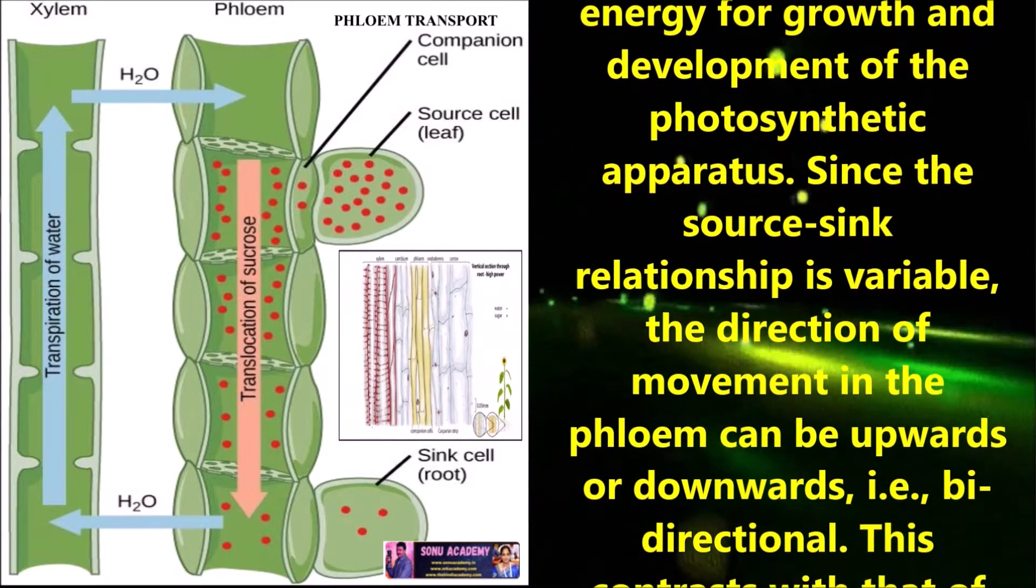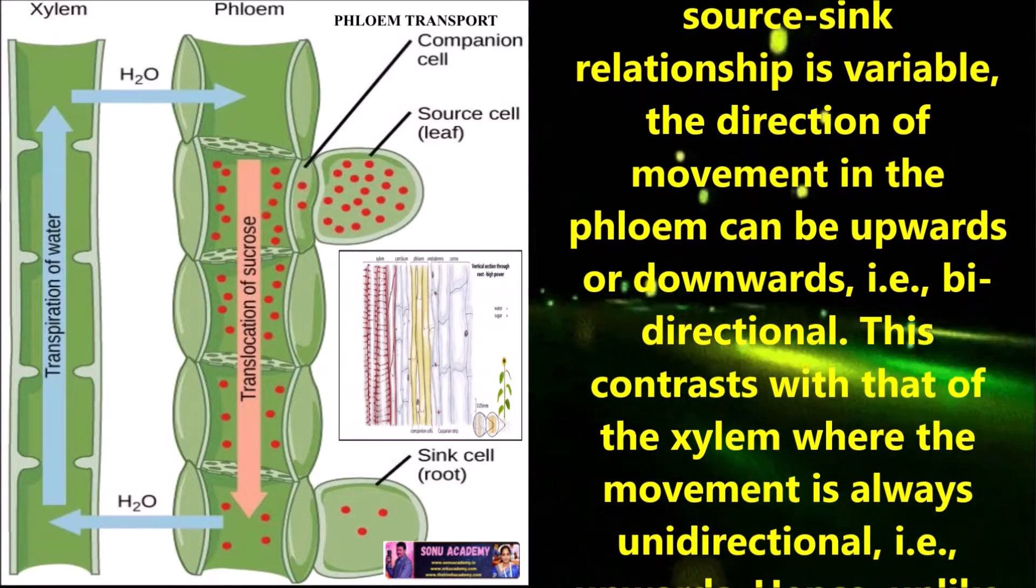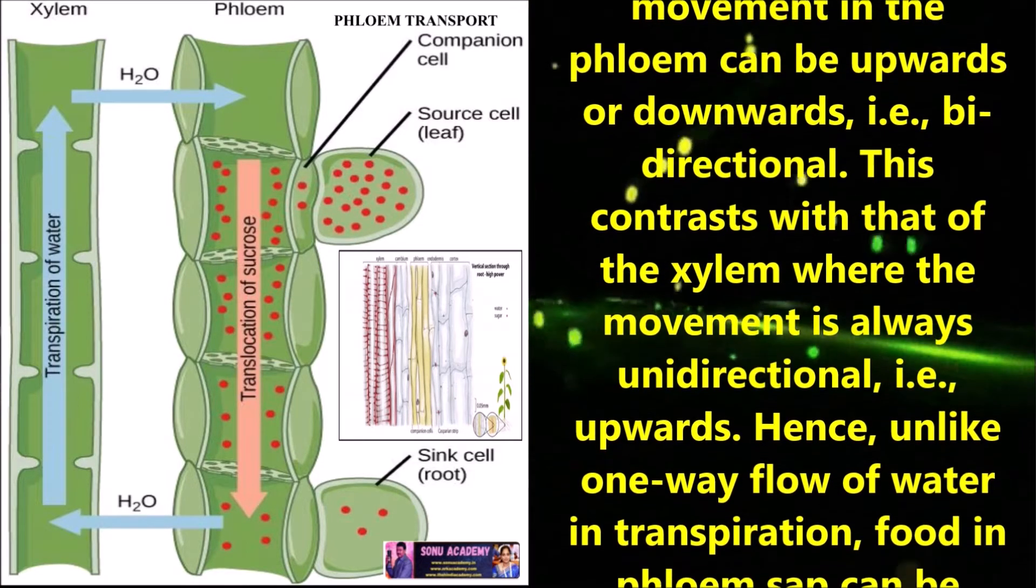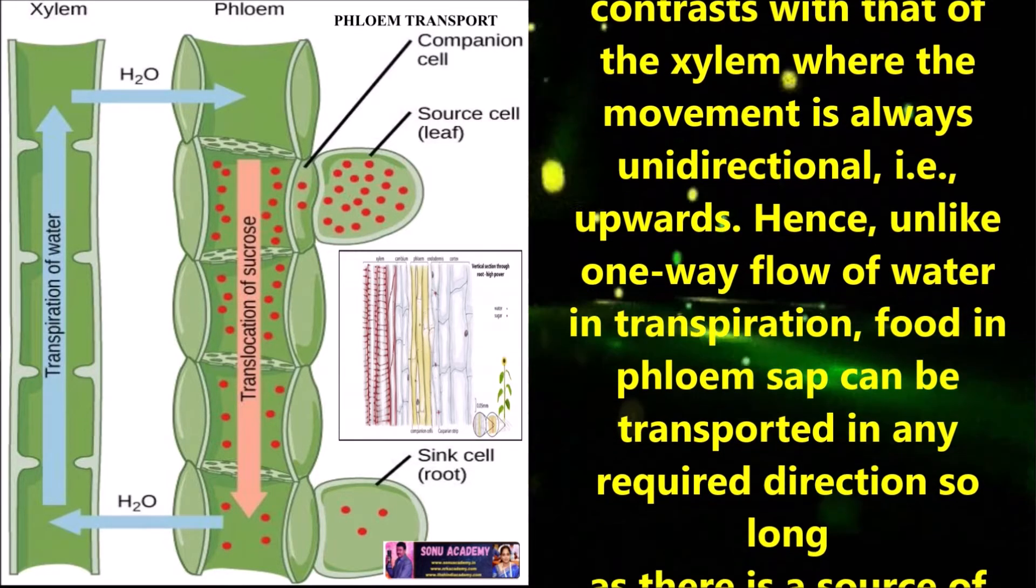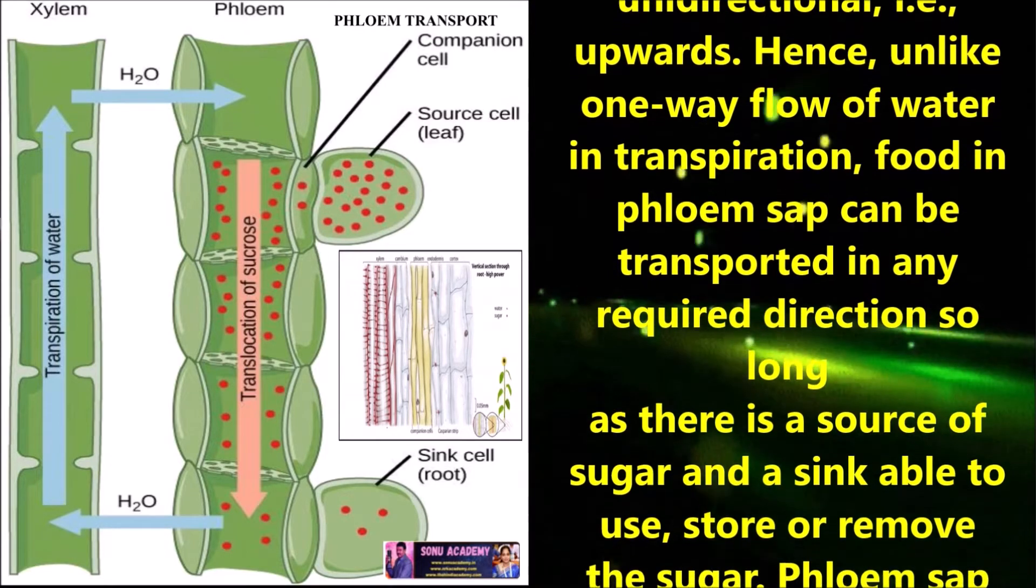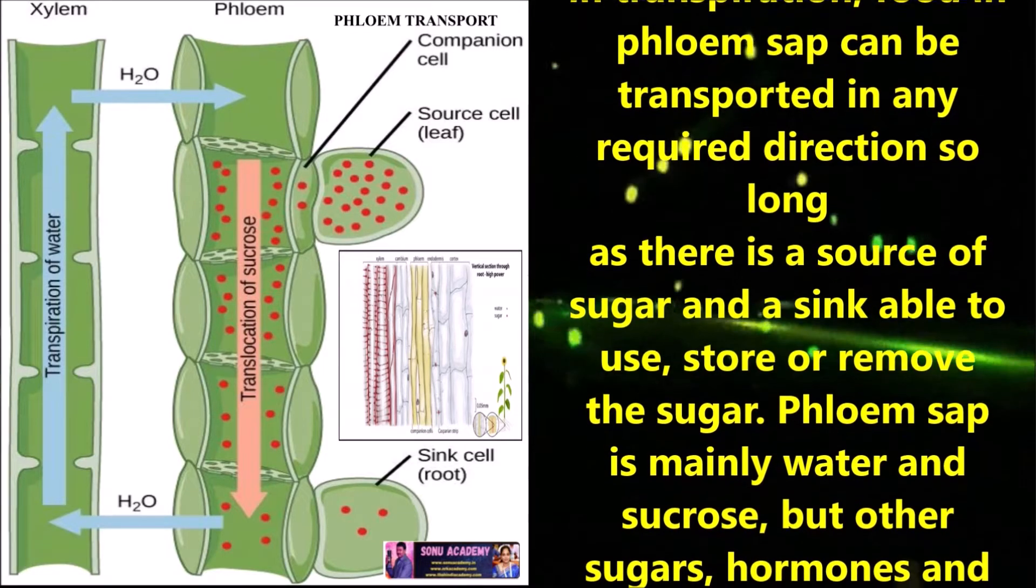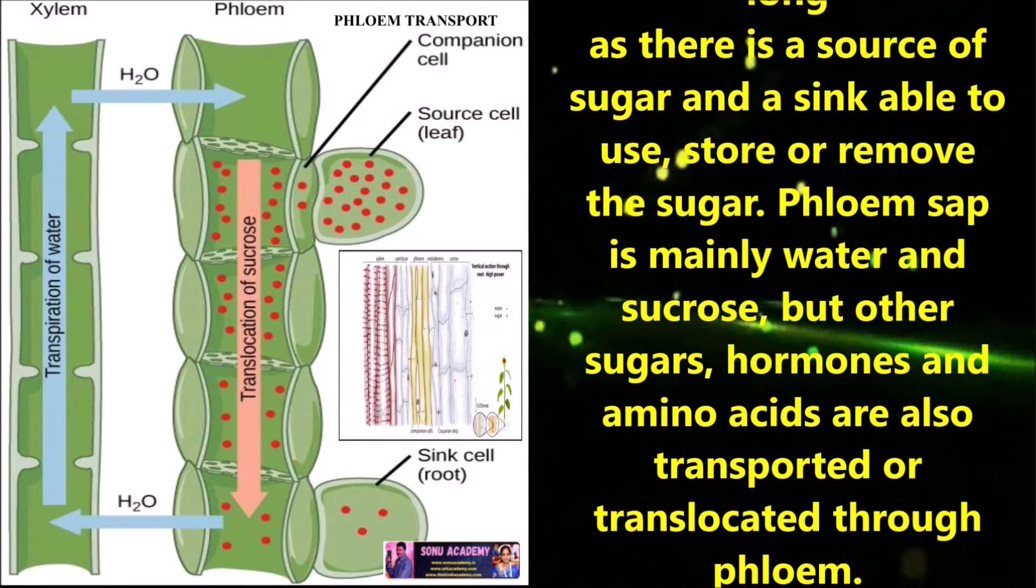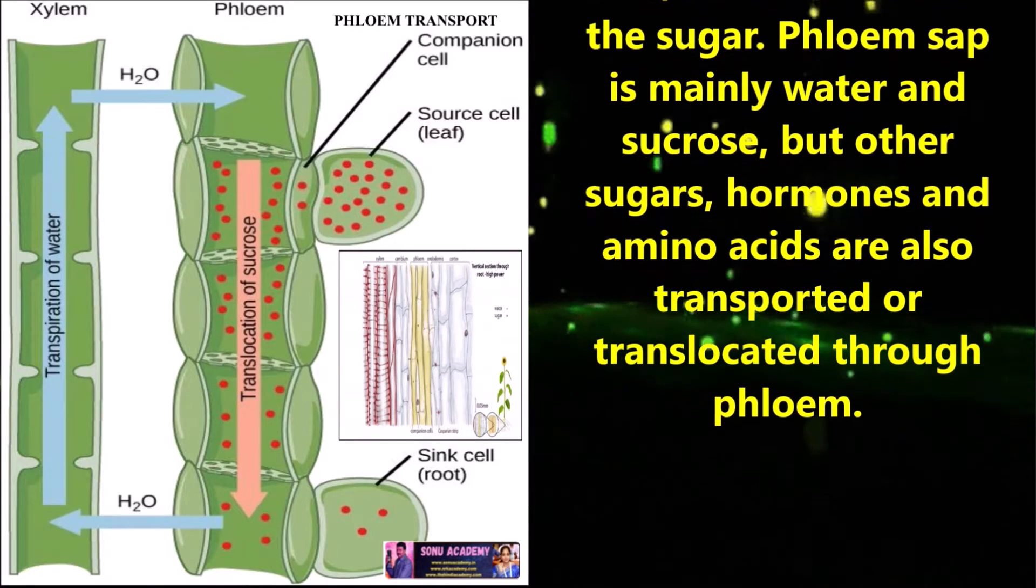Since the source-sink relationship is variable, the direction of movement in the phloem can be upwards or downwards, i.e. bidirectional. This contrasts with that of the xylem where the movement is always unidirectional, i.e. upwards. Hence, unlike one-way flow of water in transpiration, food in phloem sap can be transported in any required direction so long as there is a source of sugar and a sink able to use, store or remove the sugar.